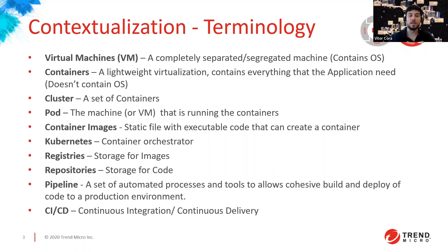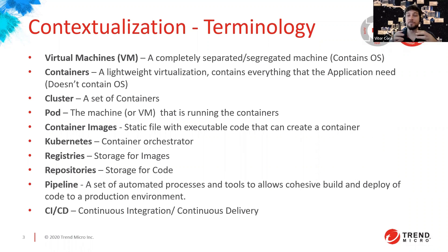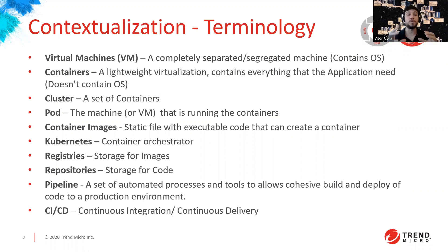A cluster is a set of containers. A pod is the machine hosting all those containers. Container images are what the container is going to run — inside them you have all the code, executables, everything. Kubernetes is the orchestrator — the buzzword nowadays — it's what makes containers and your application run the way you have prepared. Registries store the images that run in your containers; repositories are where you store the code — an important distinction in container security.